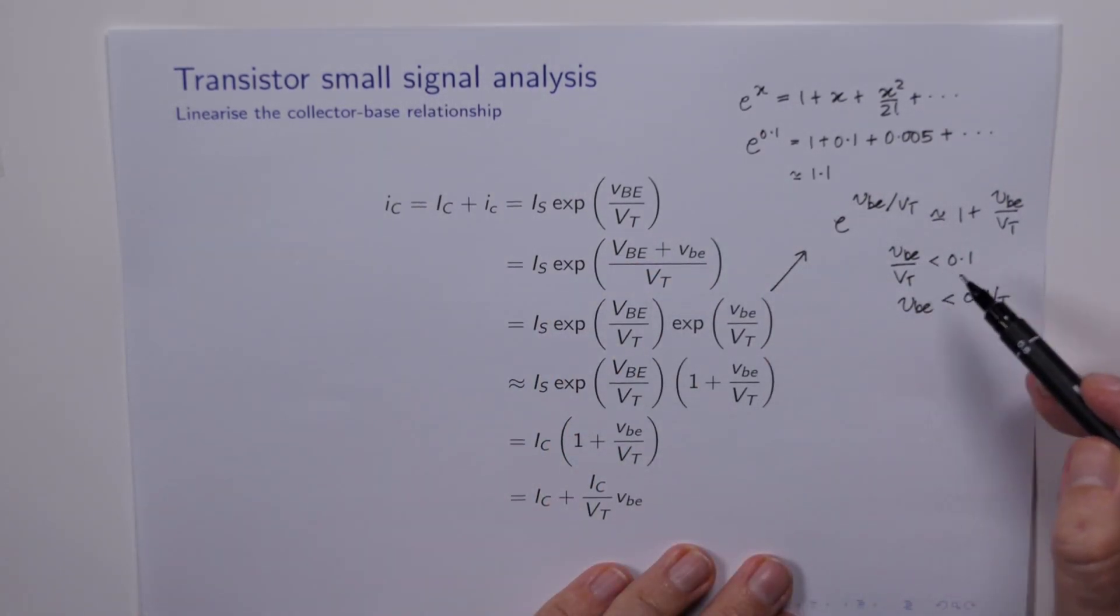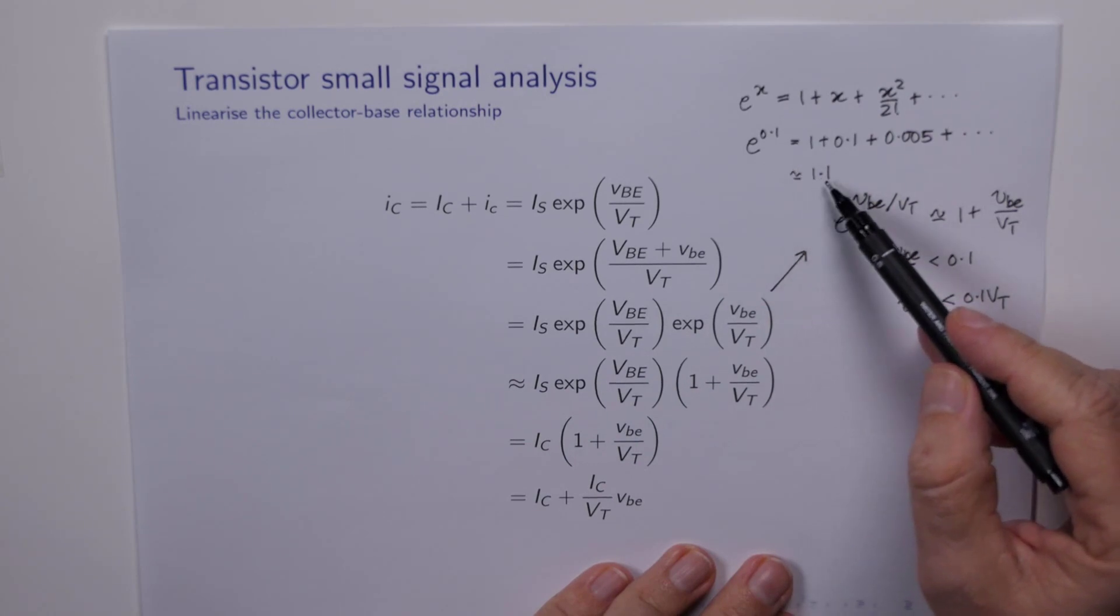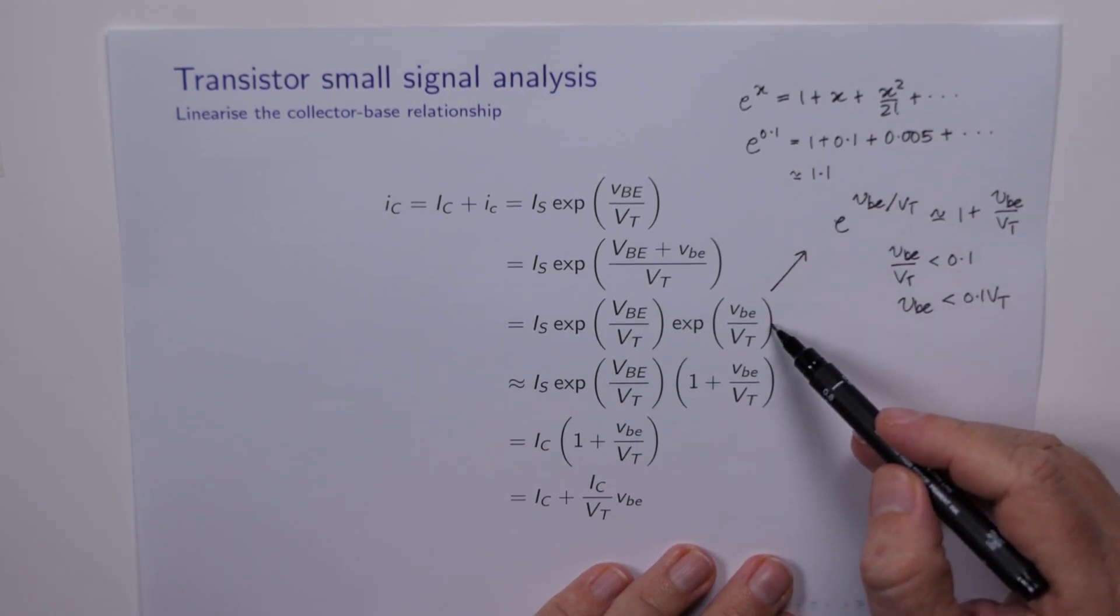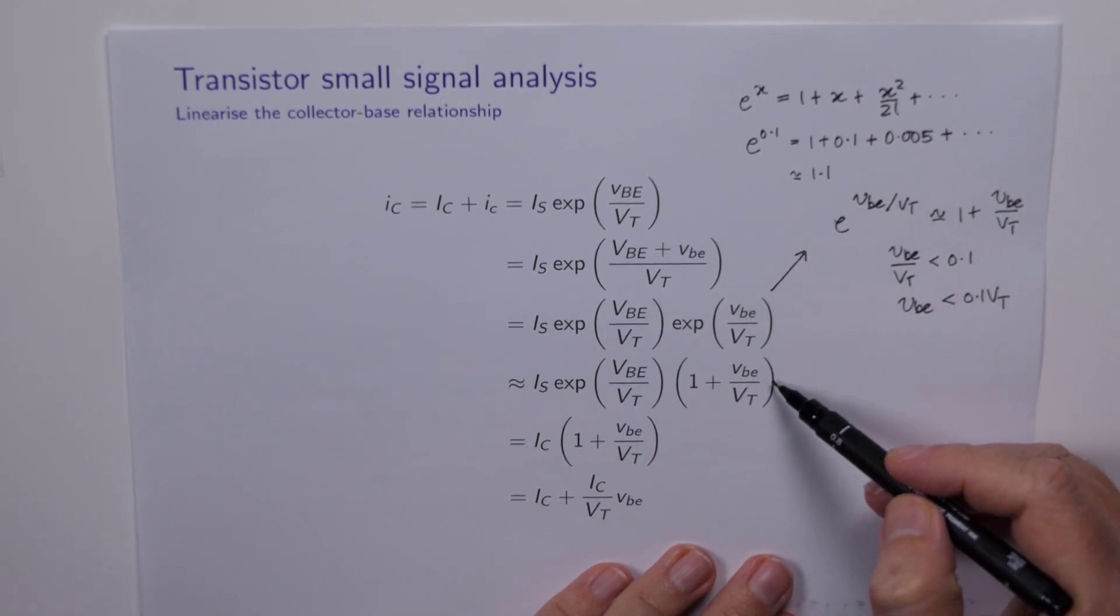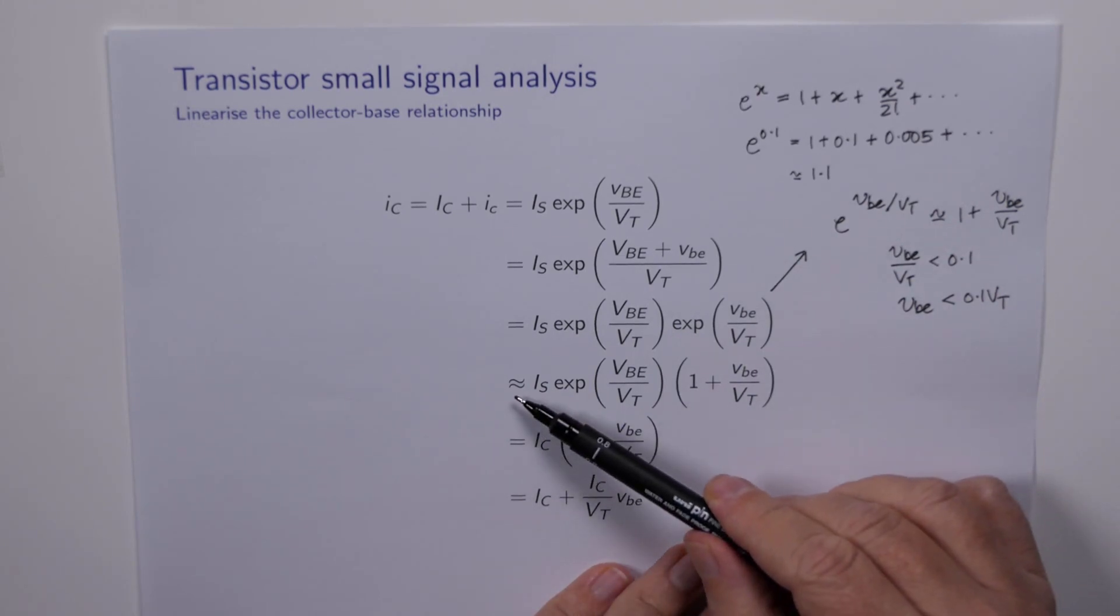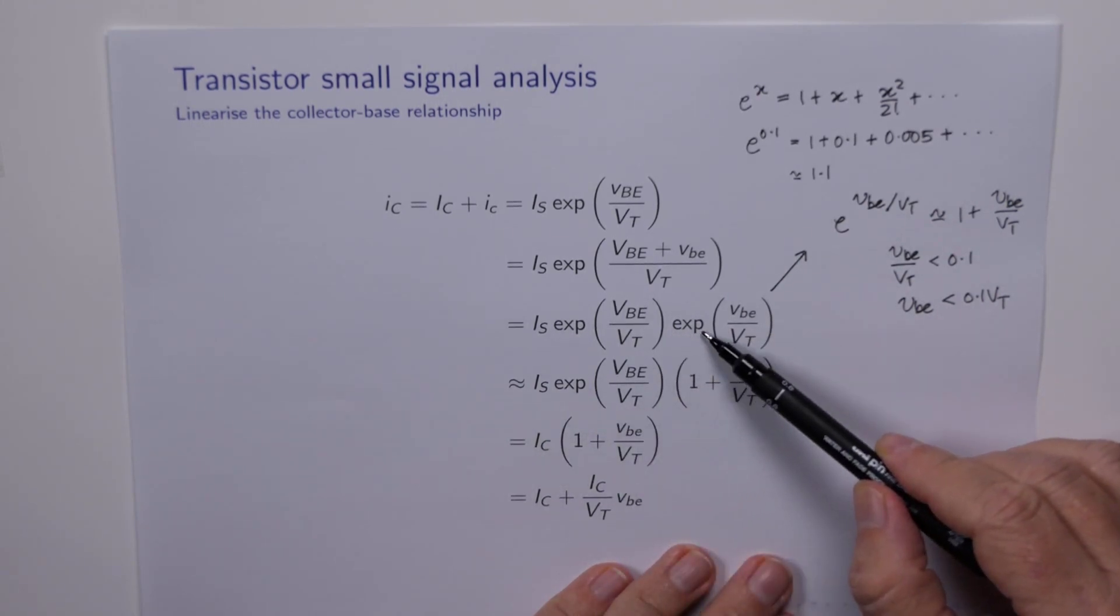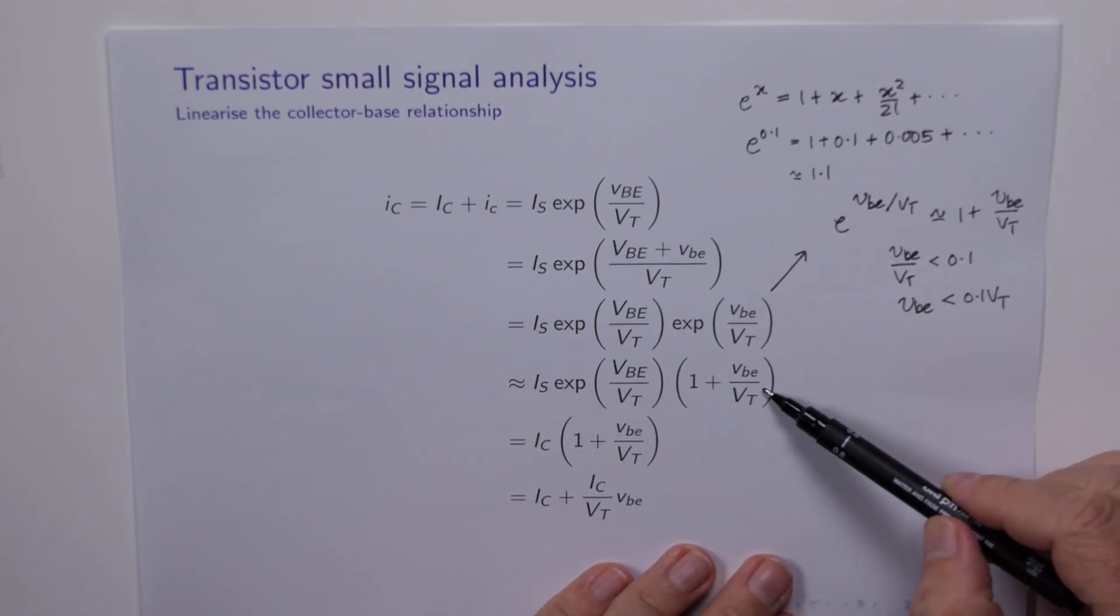Provided VBE is kept down to just a few millivolts, this approximation is valid, and therefore it's okay to go from here to here. So that's why we've got the approximation sign, because we're going from the full exponential to this linear expression.